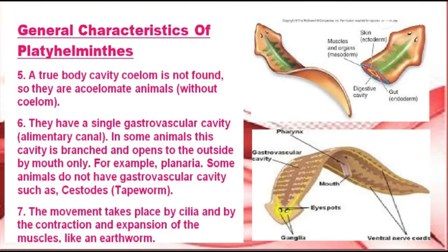A true body cavity called a coelom is not found, so they are acoelomate animals. They have a single gastrovascular cavity, which in some animals is branched and opens to the outside by the mouth only, for example planaria. Some animals do not have a gastrovascular cavity, such as Cestoda, i.e., tapeworms.